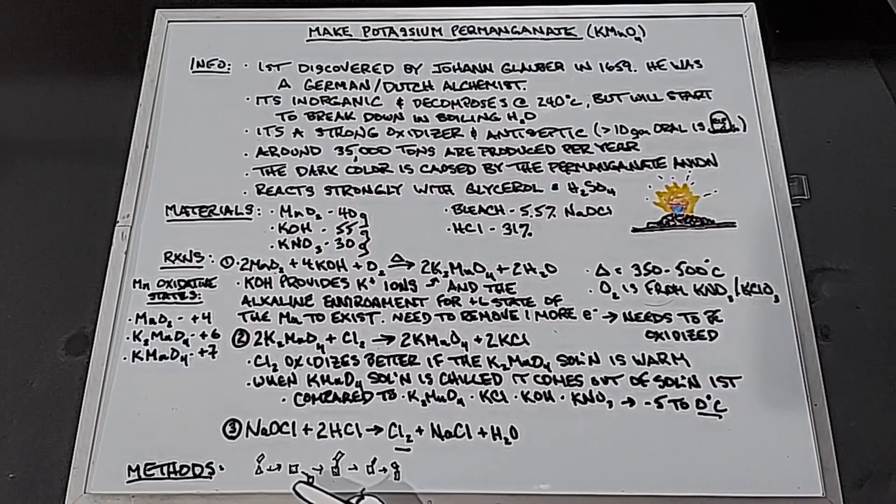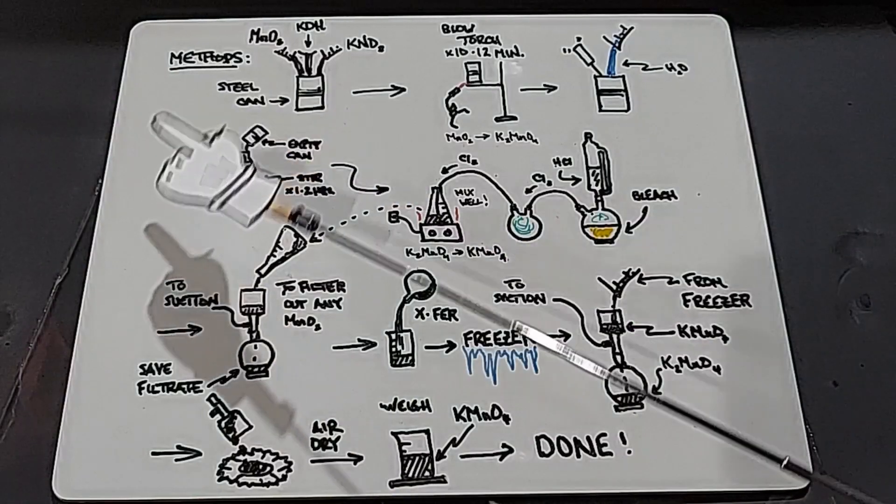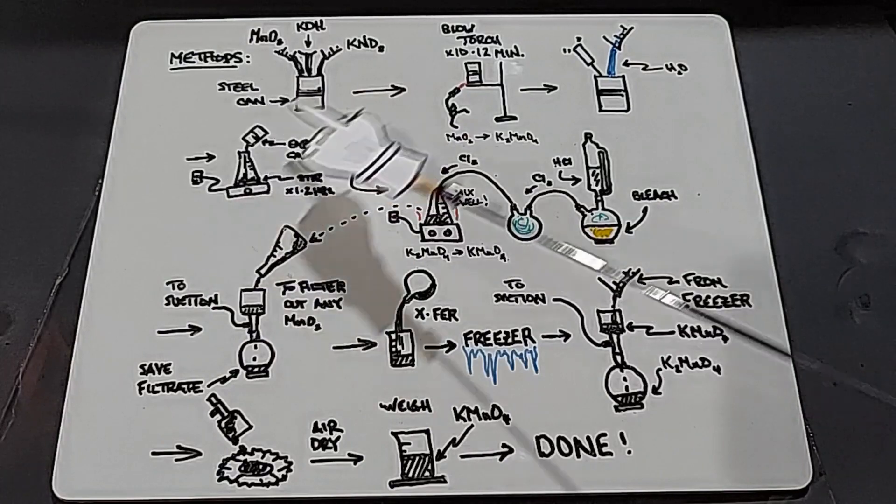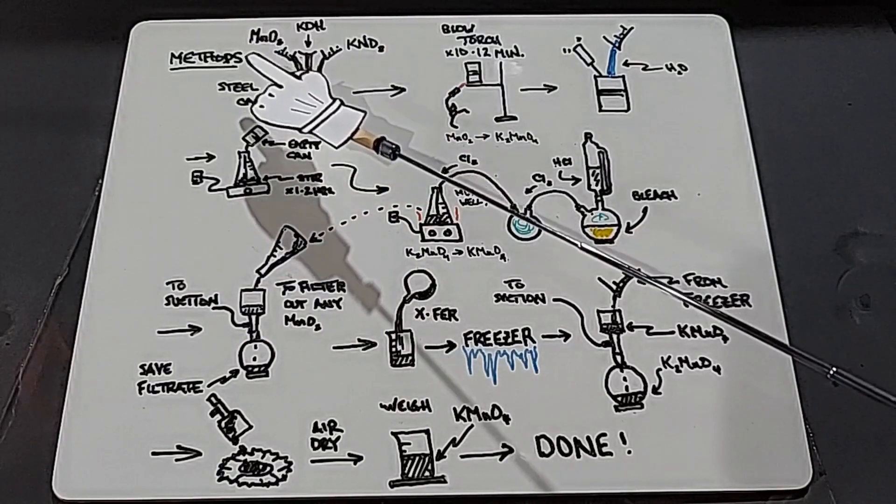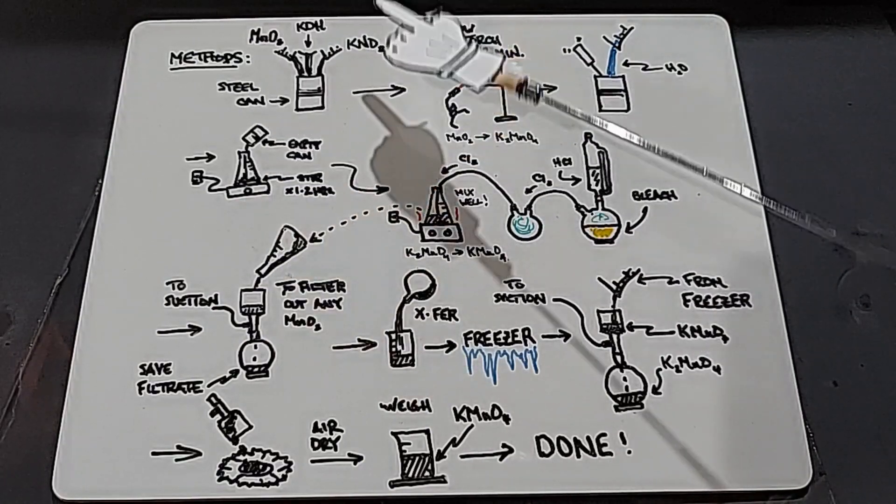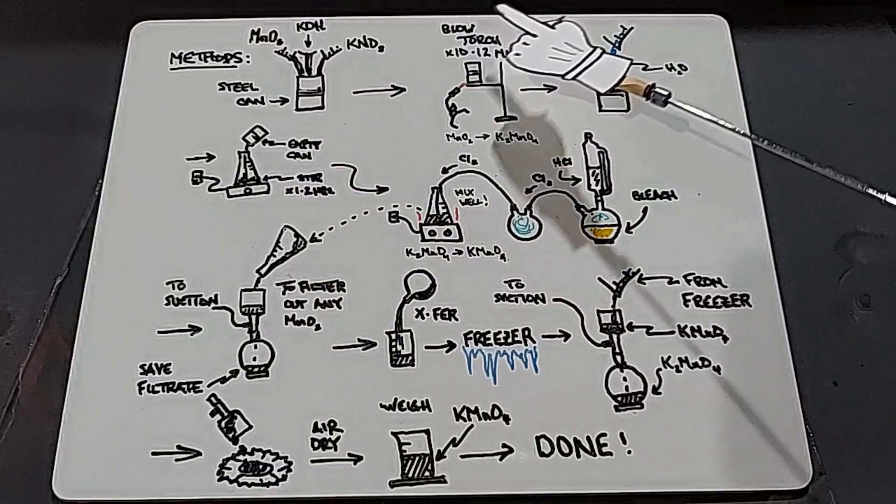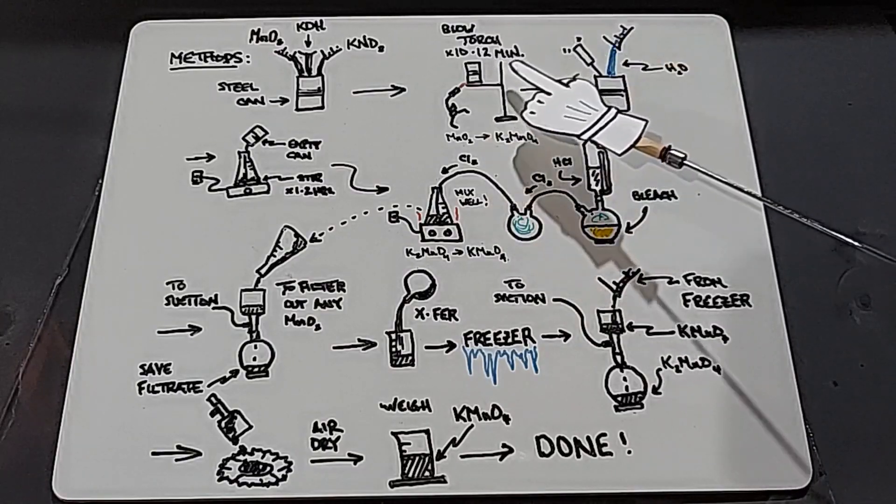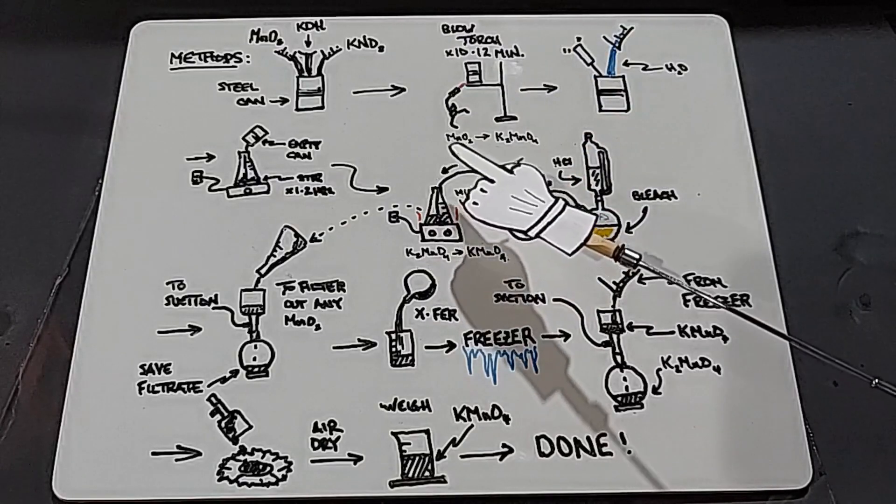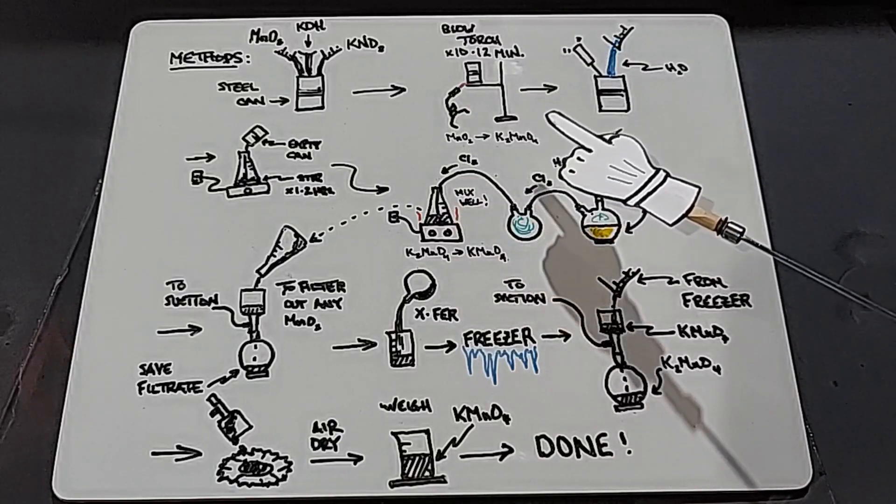In our methods, we need a steel can. We're going to put the manganese dioxide, potassium hydroxide, and potassium nitrate in there. Mix it about good. Then I'm going to blow torch it for at least 10 to 12 minutes at high heat so that this is red hot. At this point, the manganese dioxide is becoming potassium manganate.